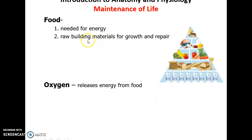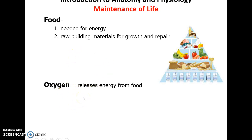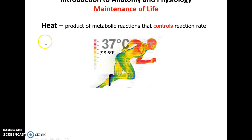We also need food — to provide energy by breaking it down, or as raw materials for growth and repair of our structures. Oxygen is needed to release energy from food. Heat is also important; we need our body to be at a set temperature because the metabolic chemical reactions work best at around our body temperature.